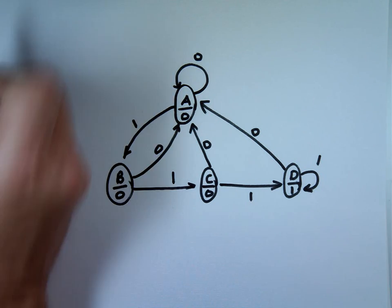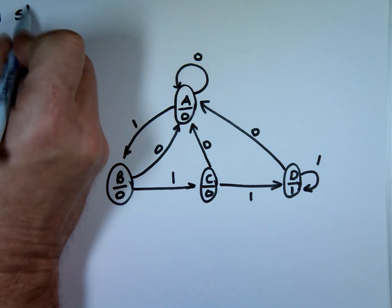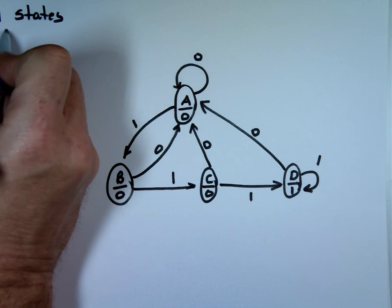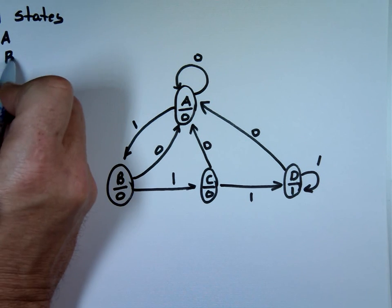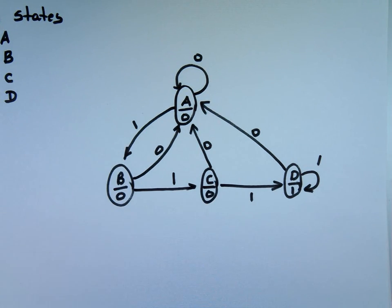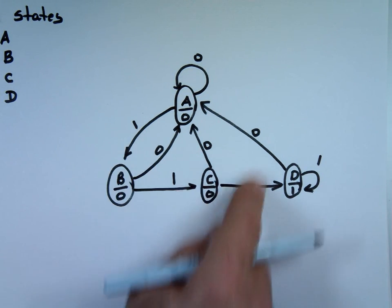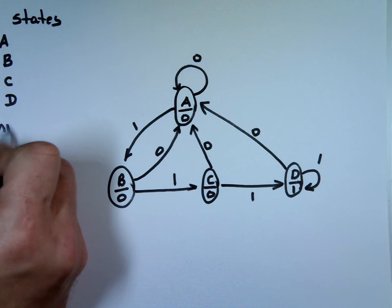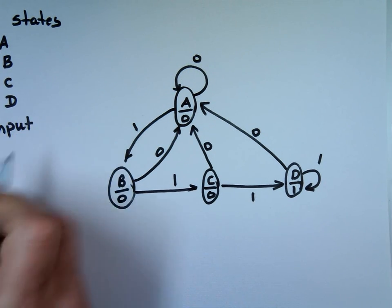So we have four states. The four states are state A, state B, state C, and state D. These numbers you see on the outside, these are your inputs. We have one input. We're going to call the input X.